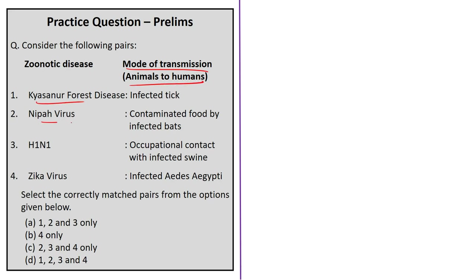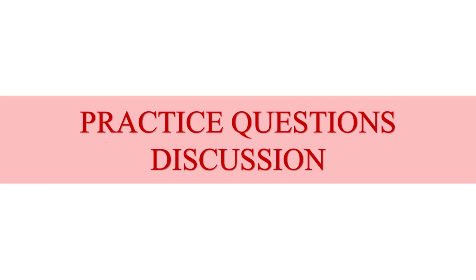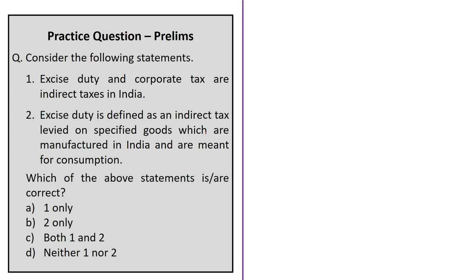The practice question asks about the mode of transmission of zoonotic diseases — four diseases and their mode of transmission are given, and all four pairs are correctly matched. The correct answer is option D: 1, 2, 3 and 4. Now for the prelims practice questions: the first question gives two statements — the first says excise duty and corporate tax are indirect taxes. To evaluate this, you must know that an indirect tax is not directly levied on taxpayers but on goods, with the tax incidence passed on to consumers.